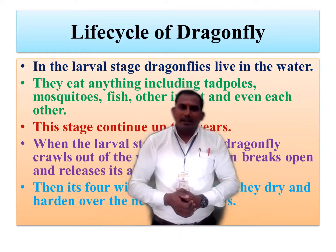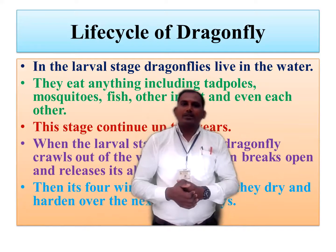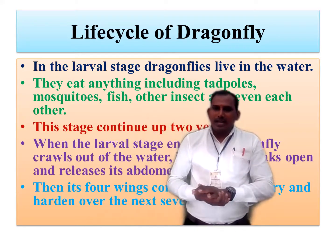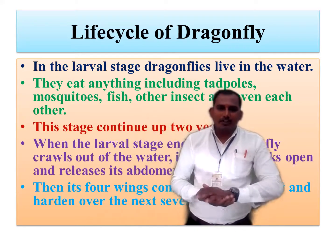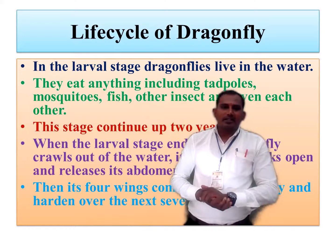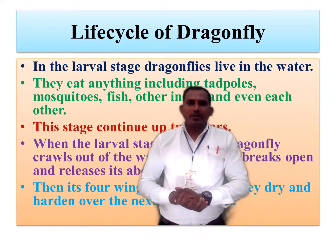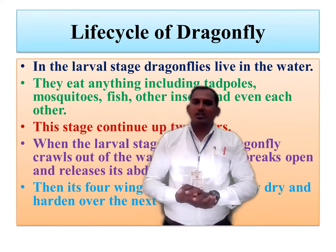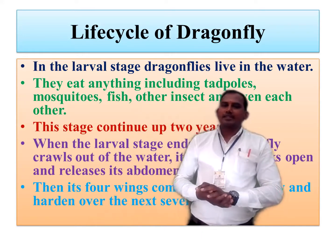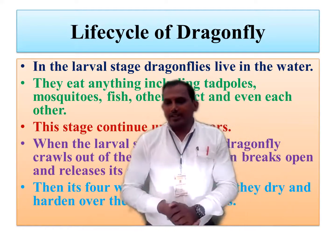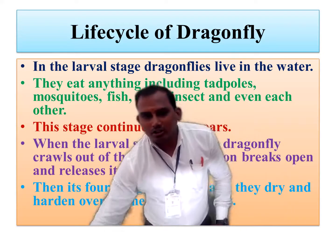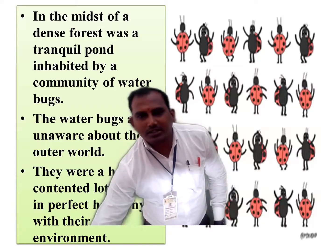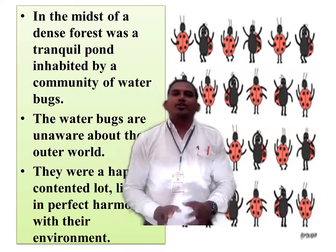Dragonfly, in the larvae stage, lives in the water. They eat anything, including tadpoles, mosquitoes, fish, other insects, and each other also.